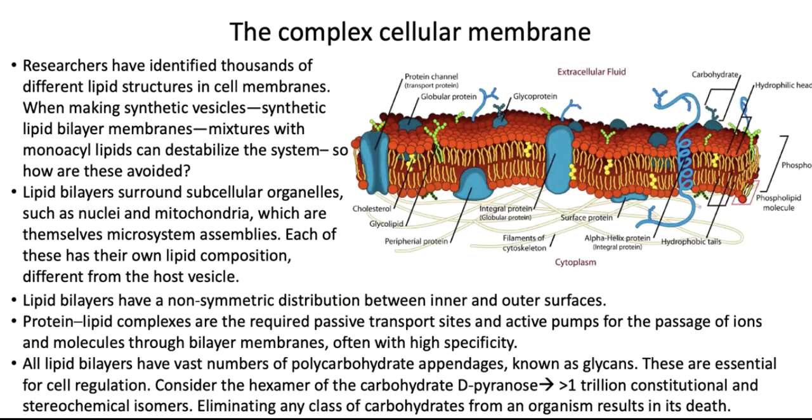Lipid bilayers also have a vast number of carbohydrate appendages. This is a carbohydrate appendage — it's called a glycan. The artist is just showing us a few of these, but a cell is covered with them. This is how cells recognize each other. By these carbohydrate assemblies, they recognize each other and have recognition patterns, so you can tell one cell from another.